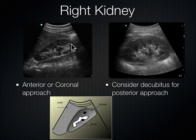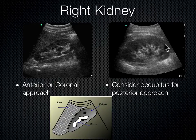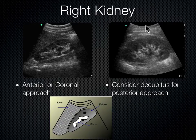When we roll the patient to left lateral decubitus and place the probe between the ribs posteriorly, we can see the kidney in its long axis with no liver in the window — just the kidney. We can also see how close the kidney lies to the skin line, about two centimeters deep in this particular patient with a posterior approach.